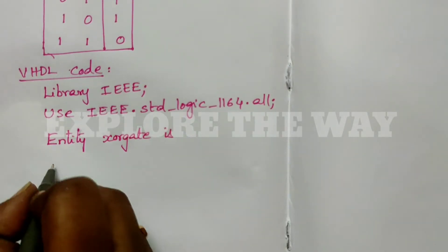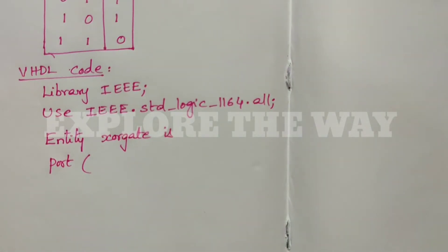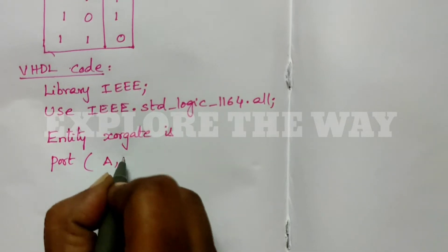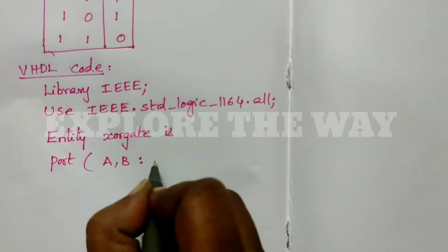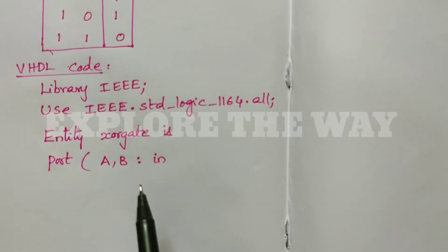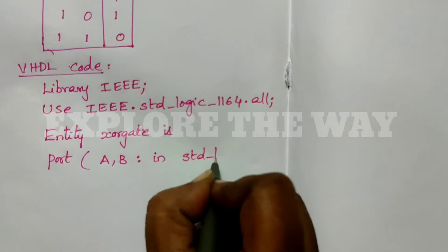Is port open bracket. Here we can declare the inputs: A, B: in std_logic.